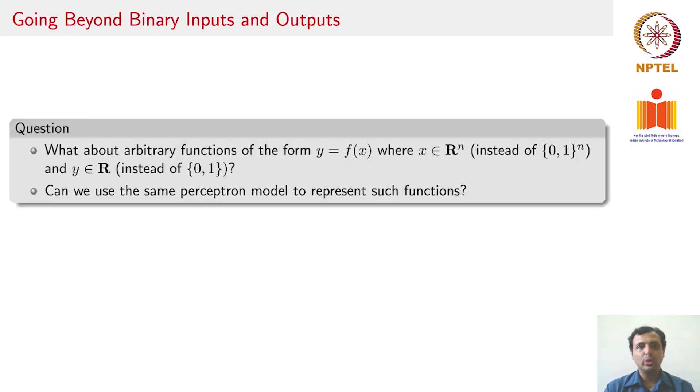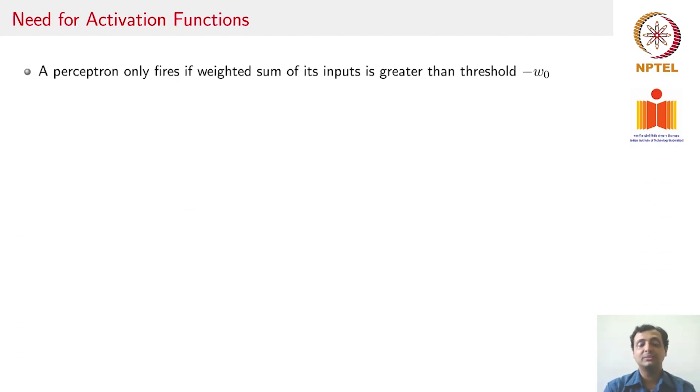Now, let us ask the question: what do we do if you want to go beyond binary inputs and outputs? We only spoke about Boolean inputs. Perceptrons could handle inputs beyond binary, but are there any relationships that we understand? The previous result was only for Boolean functions. What if that function was not Boolean? The answer is we need something called activation functions.